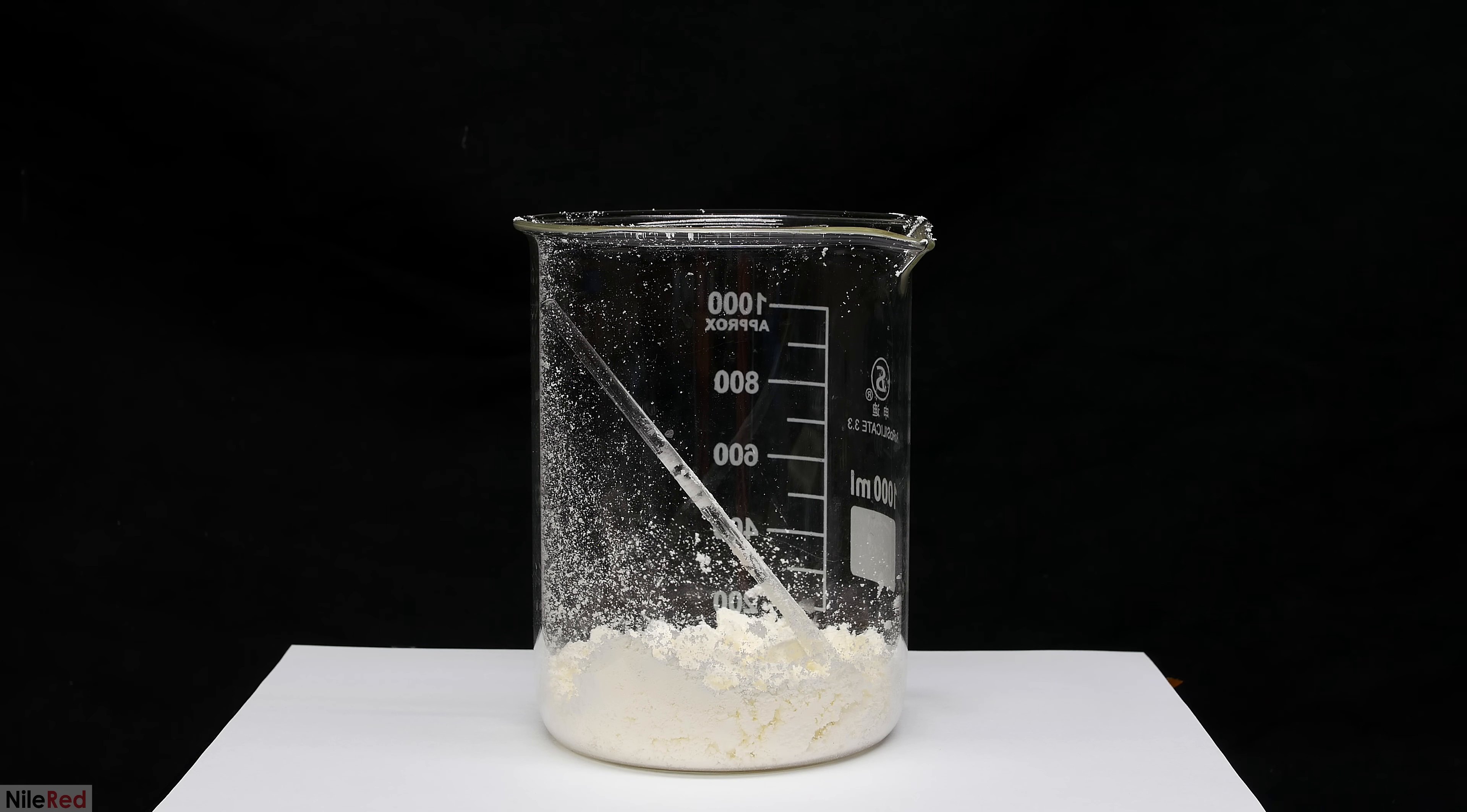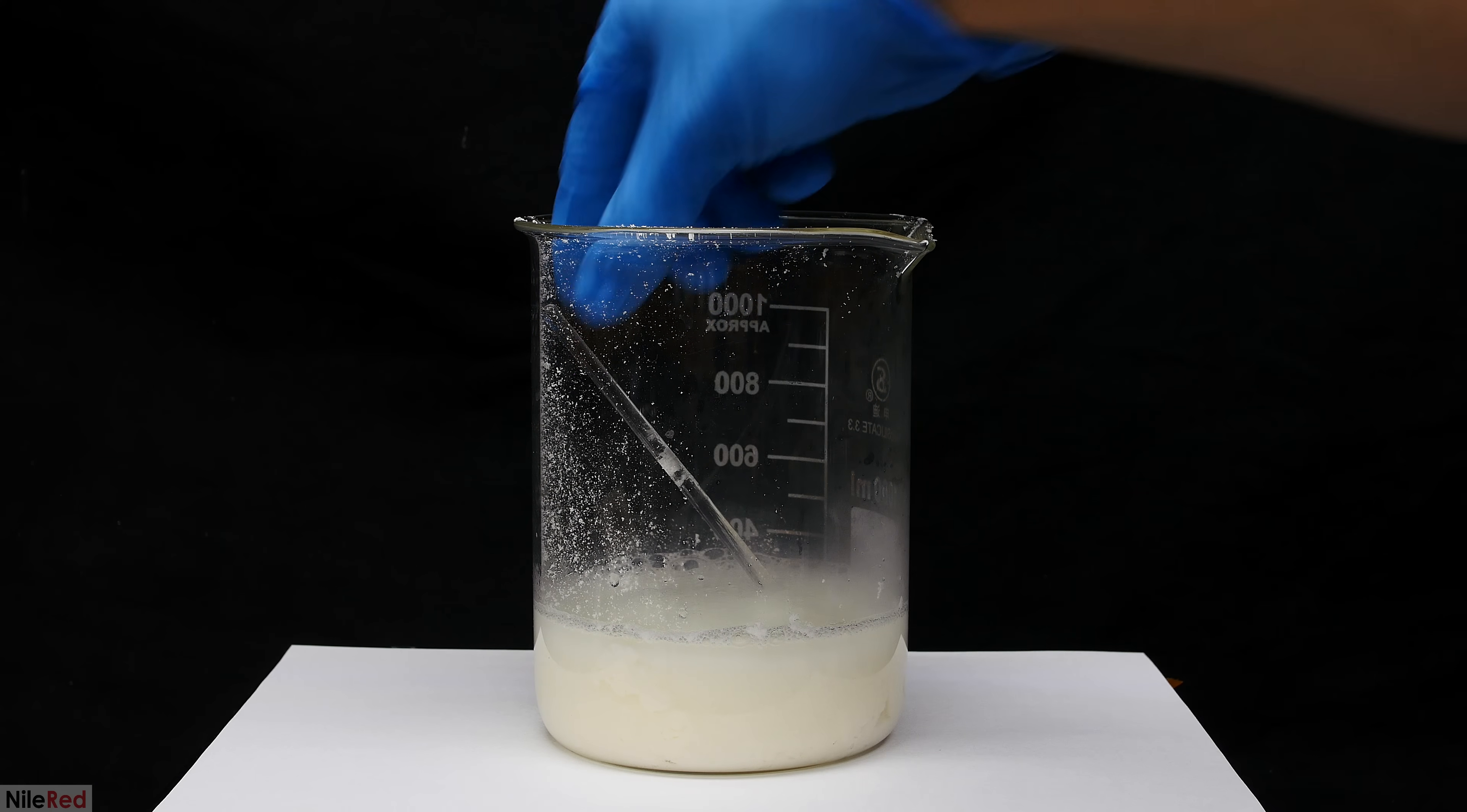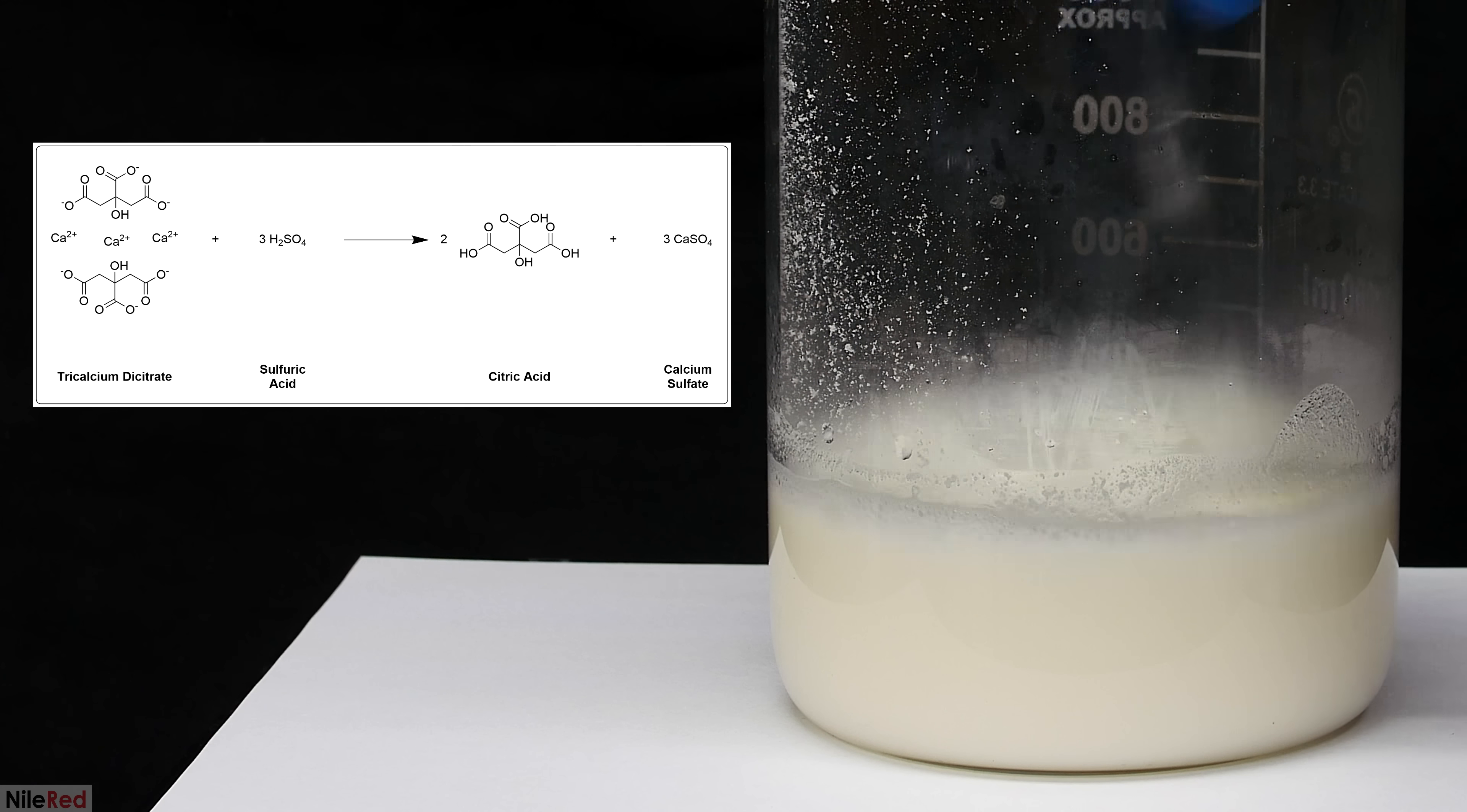All of the calcium citrate is then transferred to a beaker and I pour in some sulfuric acid. It's important to note that the sulfuric acid I'm using here is not concentrated and it's pretty heavily diluted in water. Anyway once it was added I used the glass stir rod to thoroughly mix everything together. In this reaction we're converting the calcium citrate back to citric acid.